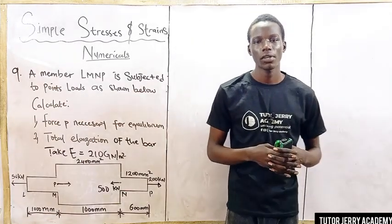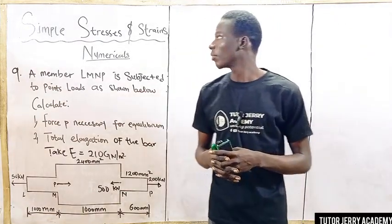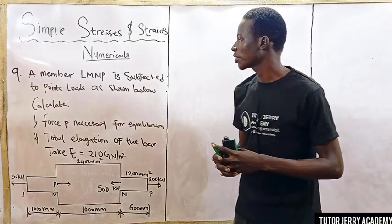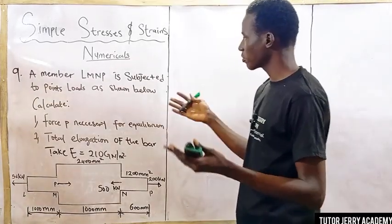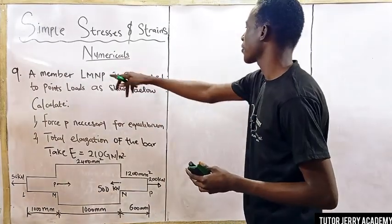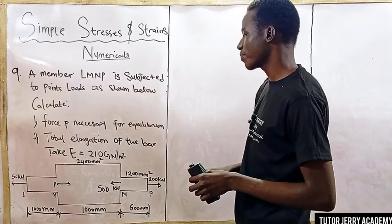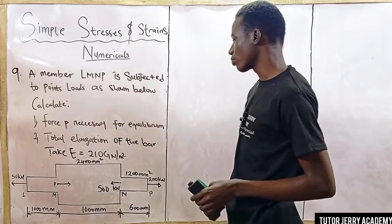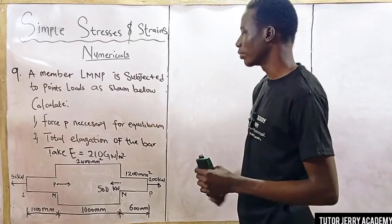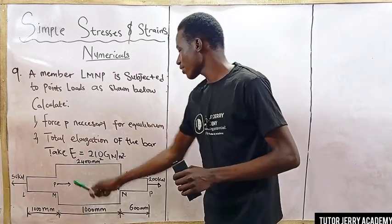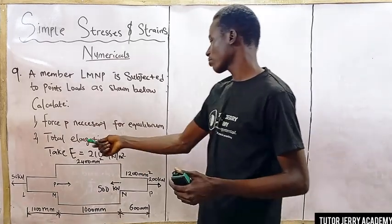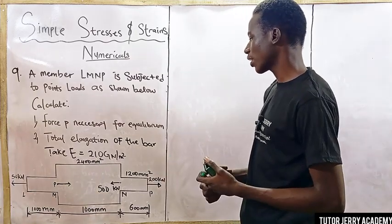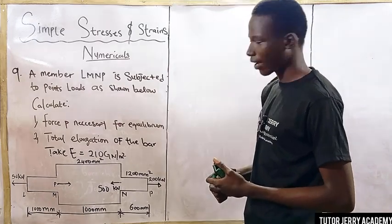Good day and welcome to today's tutorial on simple stresses on a member LMNP. We are on numerical number 9. The question on the board says: member LMNP is subjected to point loads as shown. We are asked to calculate the force P necessary for equilibrium, and also to calculate the elongation of the bar. We are given E to be 210 gigapascals per meter squared.